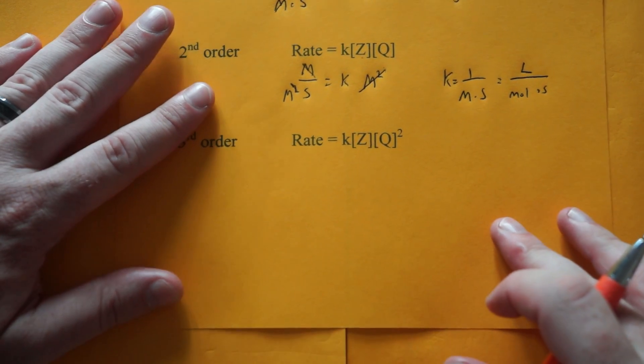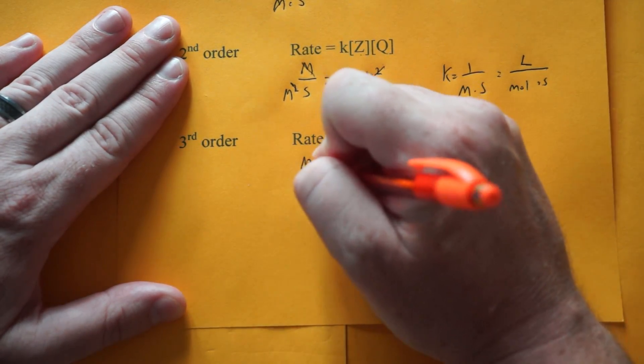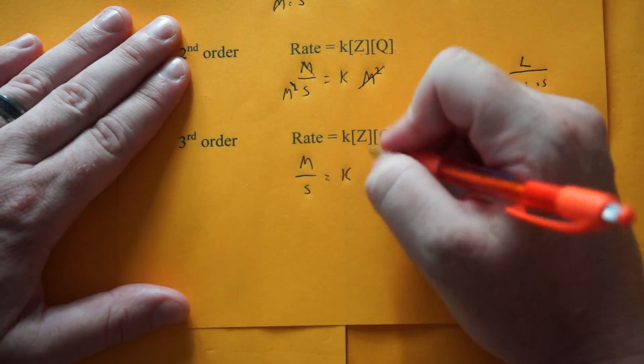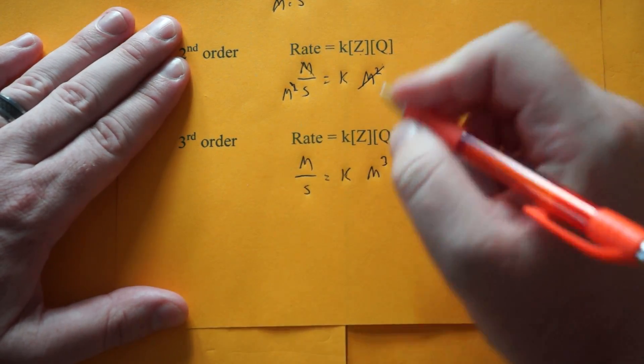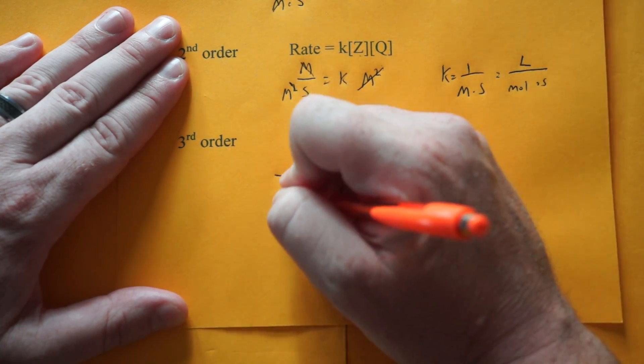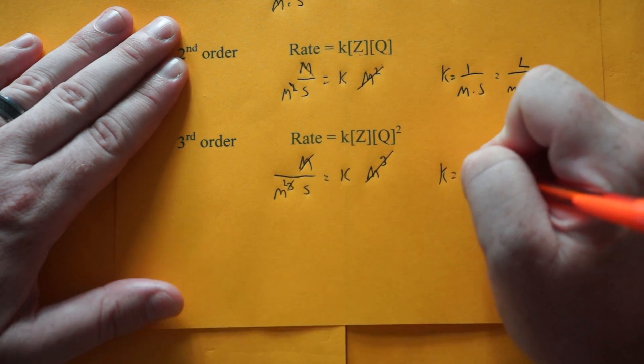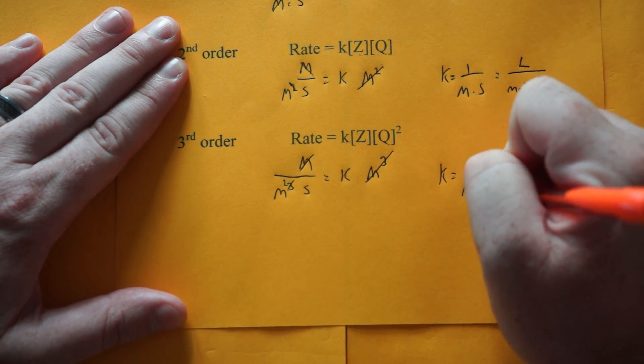And the last one I'm going to do is a third order rate law. So molarity per second is equal to k. And I just picked this. It's z times q squared, which is really just going to be molarity cubed. So we're going to bring that over to the denominator, molarity cubed, and knock out one of these. So it comes out to k is equal to 1 over molarity squared seconds.